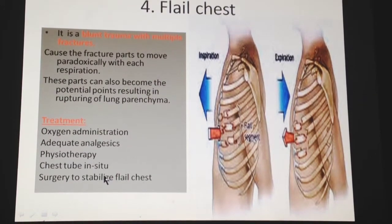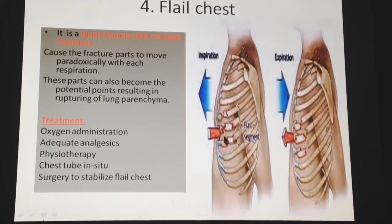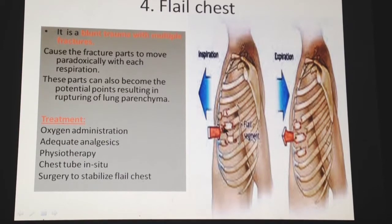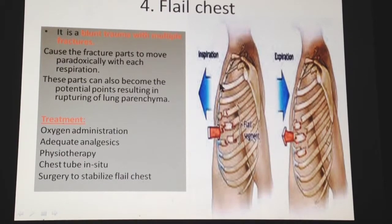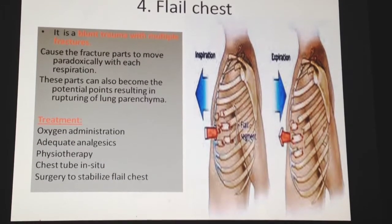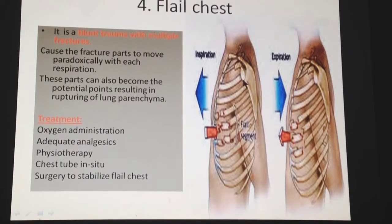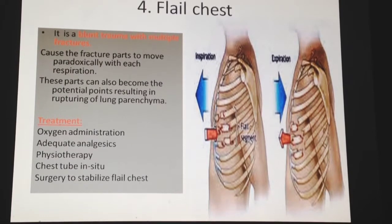Flail chest is caused by blunt trauma resulting in multiple rib fractures at two points, making a segment free to move paradoxically with respiration — moving inward during inspiration and outward during expiration, opposite to normal. These fracture points can rupture the lung parenchyma, leading to pulmonary contusion. Treatment includes oxygen administration, analgesics, physiotherapy, chest tube insertion, and surgical stabilization of the flail segment.